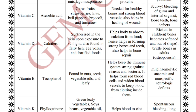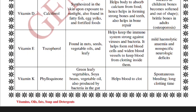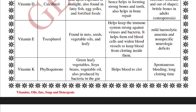Vitamin D is calciferol; its deficiency causes rickets, which generally occurs in children whose bones become softened and out of shape. Vitamin E is tocopherol, and its deficiency causes mild hemolytic anemia. Vitamin K is phylloquinone, and its deficiency causes spontaneous bleeding.